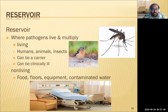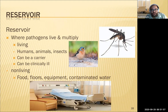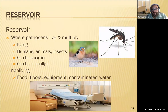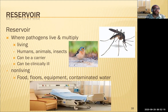The reservoir is where pathogens live and multiply — humans, animals, insects can be carriers. Fomites are non-living things: food, floors, equipment, contaminated water. For example, a toddler crawling across a hospital floor is concerning — we clean the floors constantly, but it's still not something they should be walking around on.